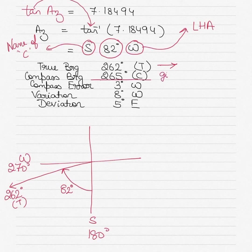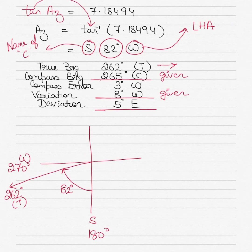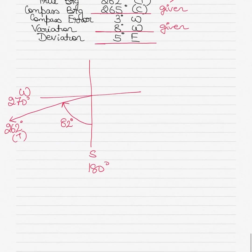The compass bearing from the question is 265°. The difference between true and compass is the compass error. 'Compass best, error West; compass least, error East.' Here compass (265°) is more than true (262°), so the compass error is 3° West. Variation is 8° West as given. Since variation is 8° West and compass error is 3° West, the deviation must be 5° East.